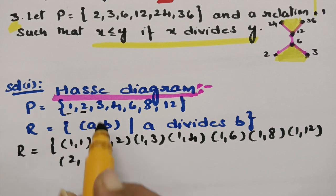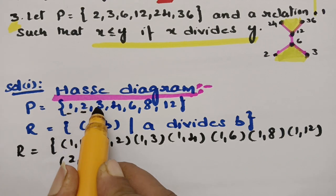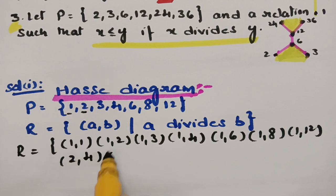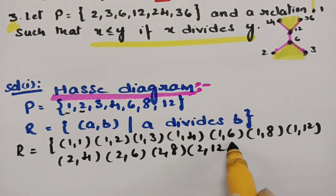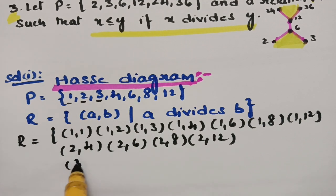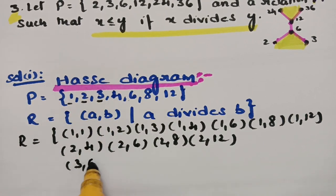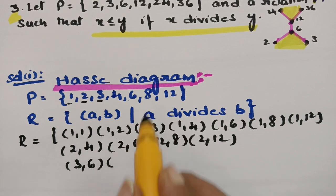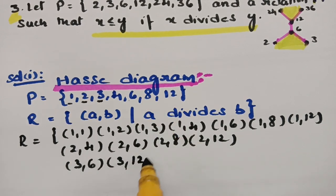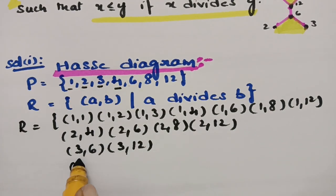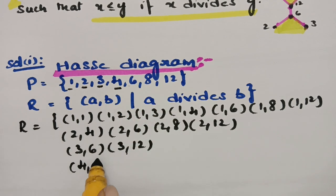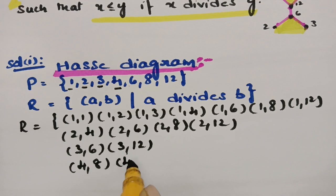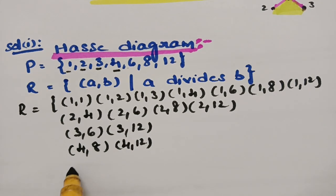Coming to 2: 2 does not divide 3, but 2 divides 4, 2 divides 6, 2 divides 8, and 2 divides 12. Coming to 3: 3 does not divide 4, but 3 divides 6, 3 does not divide 8, and 3 divides 12. Coming to 4: 4 doesn't divide 6, but 4 divides 8, and 4 also divides 12.